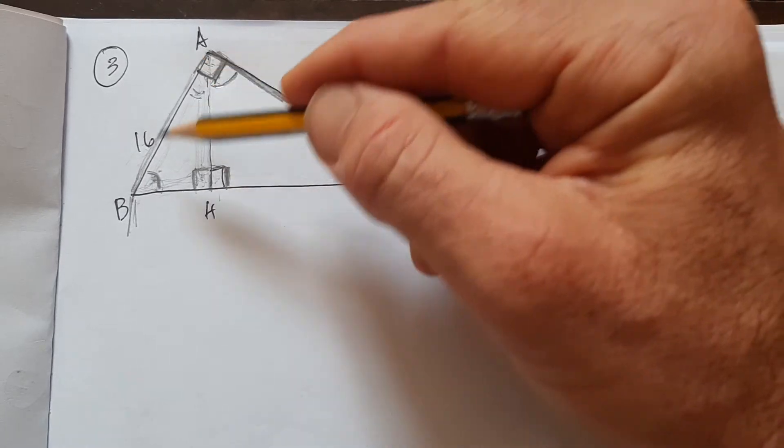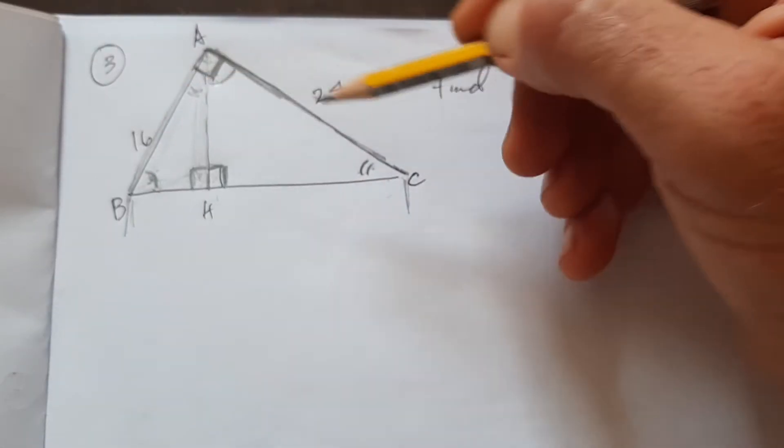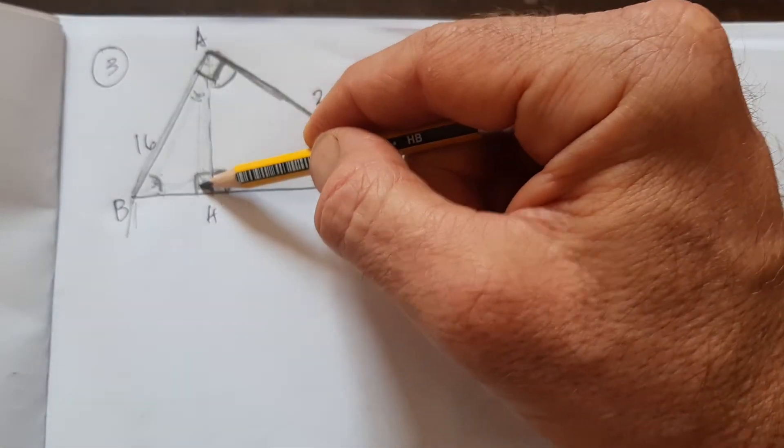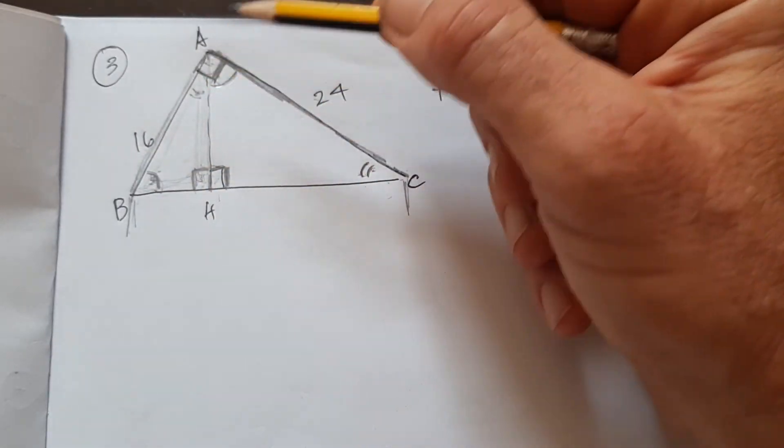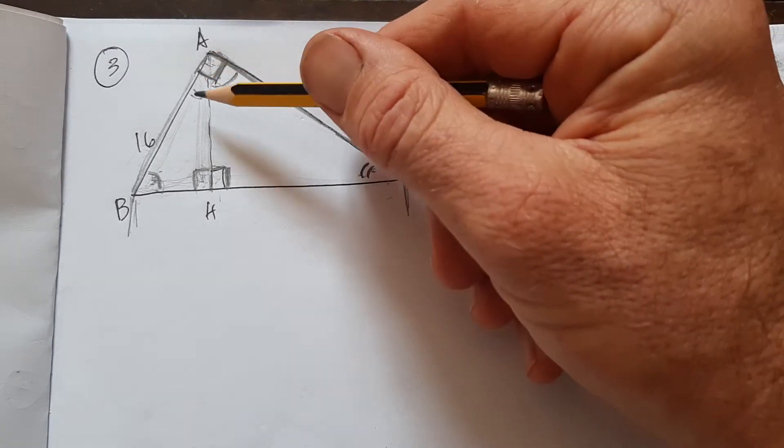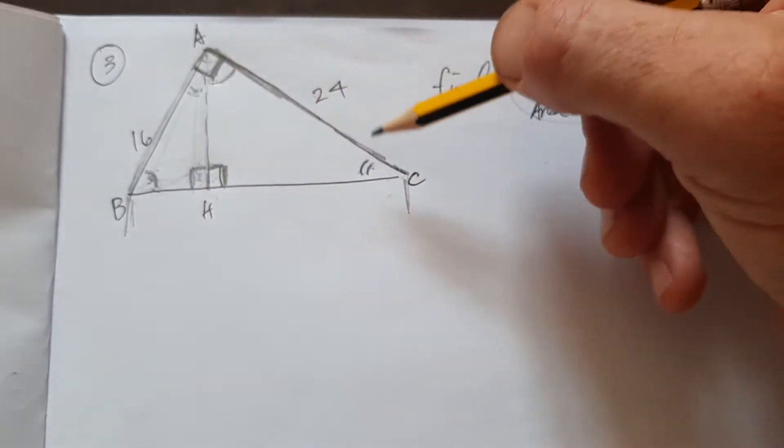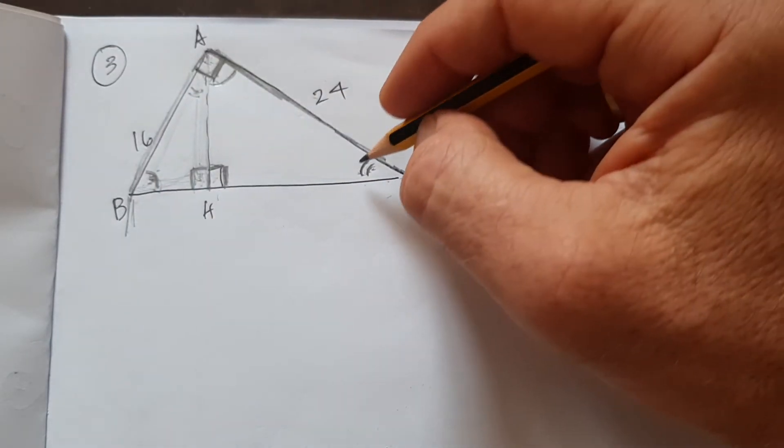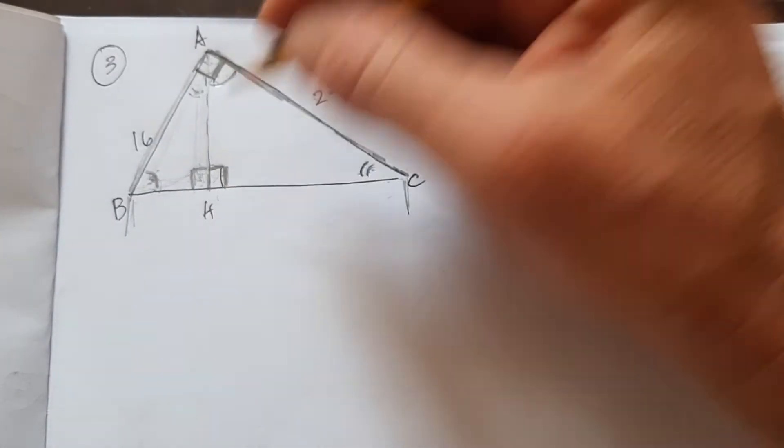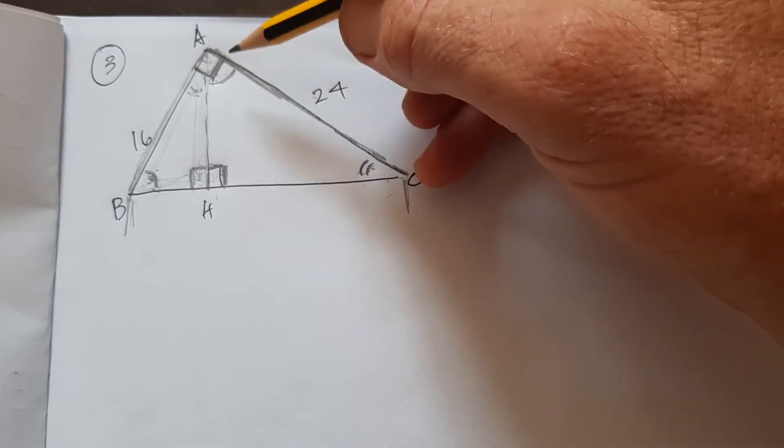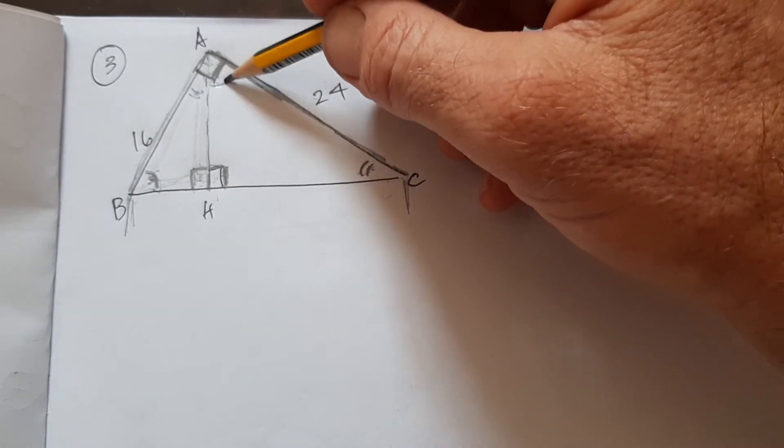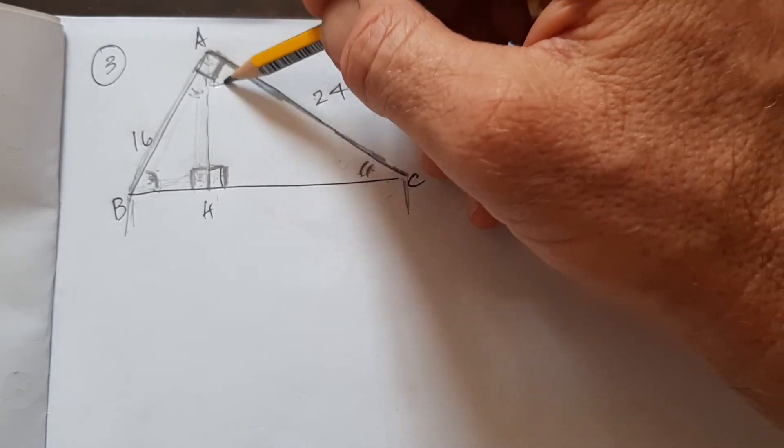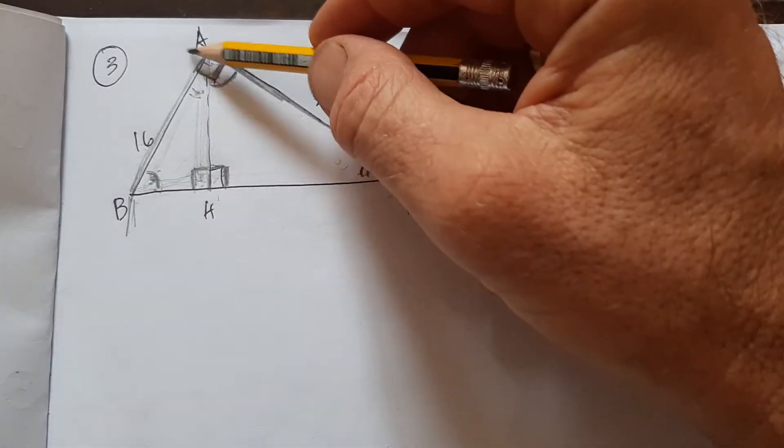But 90 plus angle B plus angle C equals 180, and then 90 plus angle B plus this little angle equals 180. So this angle is congruent to this angle. This angle is congruent to itself. And then this plus this plus this 90 equals 180. So these angles are complementary. And so this angle here is the same as that angle.